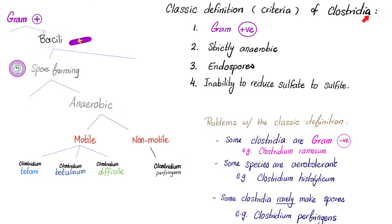The classic definition of Clostridia requires them to be gram-positive, strictly anaerobic, endospore-forming, and unable to reduce sulfate into sulfite. However, this definition is not fully accurate due to exceptions. Some Clostridia are gram-negative, for example Clostridium ramosum. Moreover, not all are strictly anaerobic — some species like Clostridium histolyticum are aerotolerant and can live with oxygen. And not all make endospores; Clostridium perfringens, for instance, rarely ever forms spores.